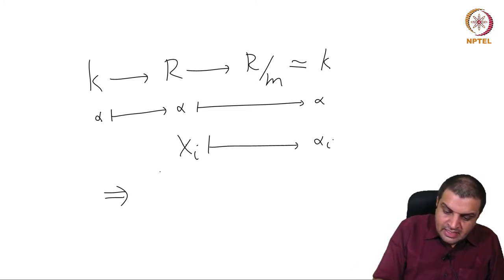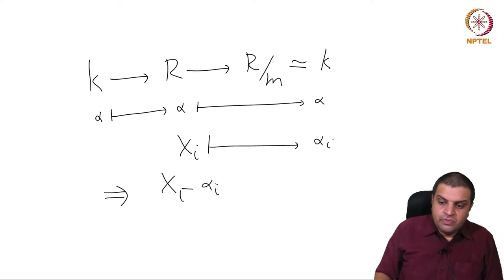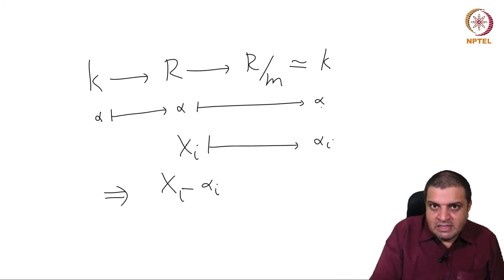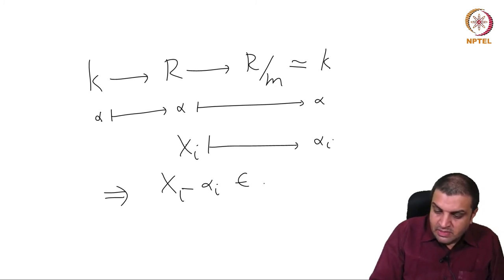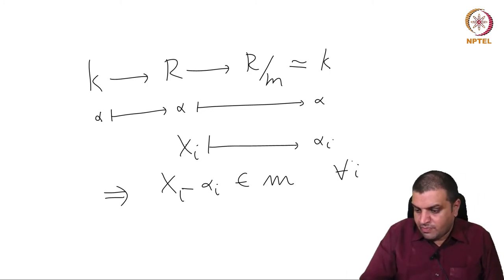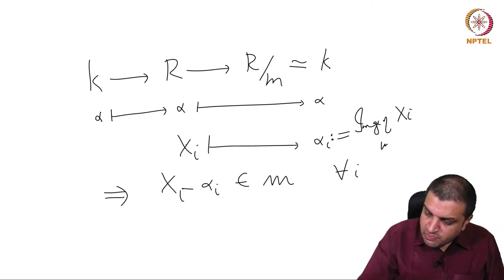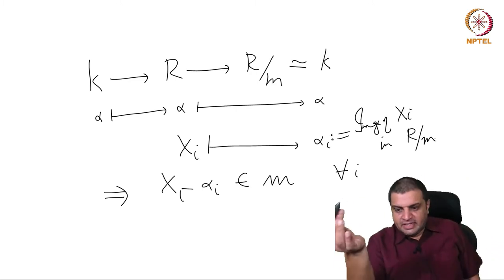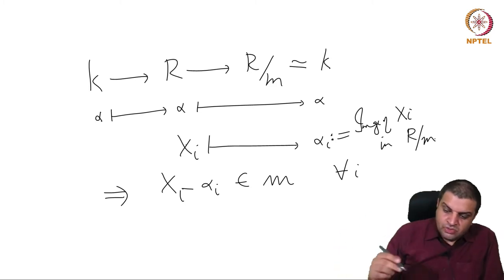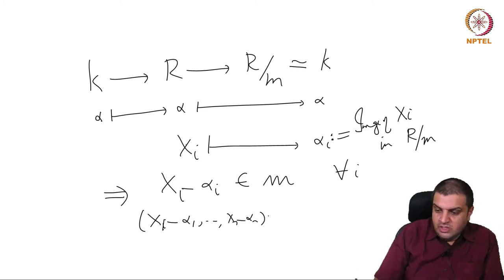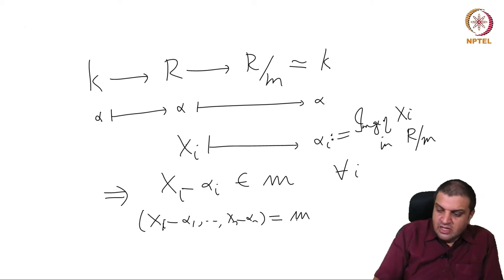Under this map, Xi minus alpha_i: alpha_i came from K and went to alpha_i directly, and Xi also went to alpha_i. So Xi minus alpha_i is inside M, because that is the kernel of this map. This is true for all i. Therefore, the ideal (X1 minus alpha_1,..., Xn minus alpha_n) is contained in M. Both are maximal — this is the maximal ideal for evaluation at (alpha_1,...,alpha_n), and M is given as a maximal ideal — so there is equality, and the maximal ideal has this form.